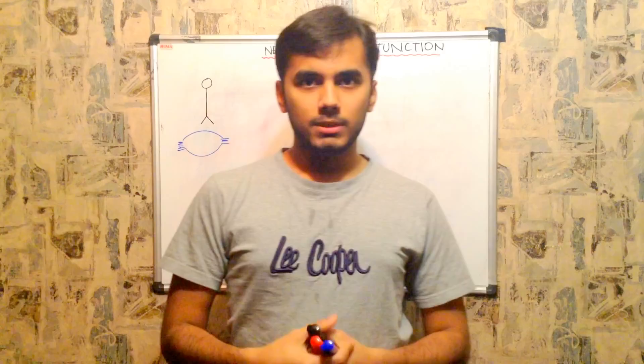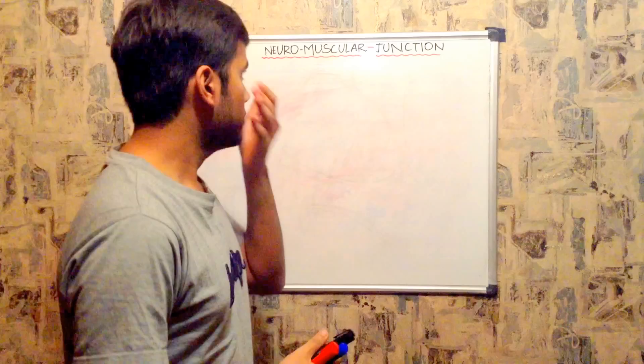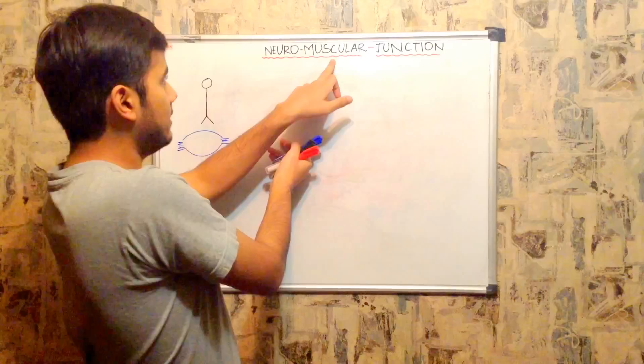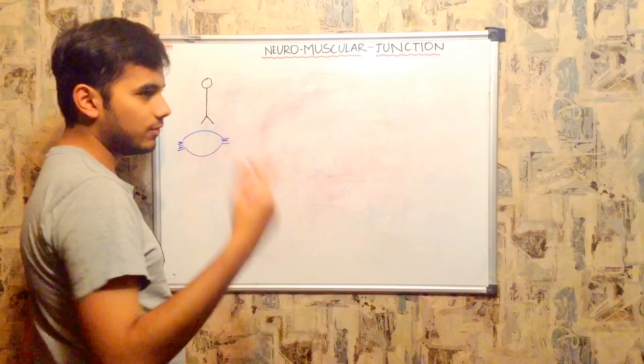Today we'll be discussing the concept of the neuromuscular junction. The neuromuscular junction is the junction between the neuron or nerve ending and the muscle. Here you find the neuron and the skeletal muscle — any skeletal muscle, for example the biceps muscle.